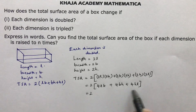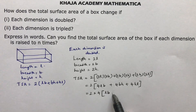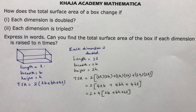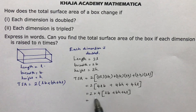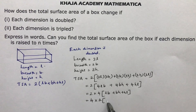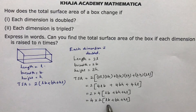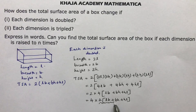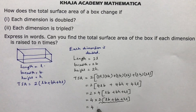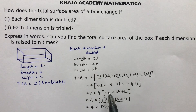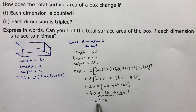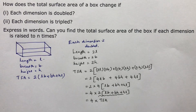Taking 2 common from the 4 gives 2 into 4 times LB plus BH plus HL, which is 4 into 2 times LB plus BH plus HL. Since 2 into LB plus BH plus HL is the total surface area, the result is 4 times the total surface area. So if each dimension is doubled, the total surface area becomes 4 times the original.